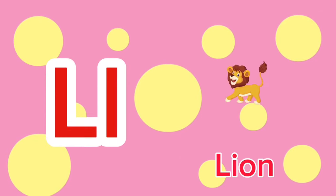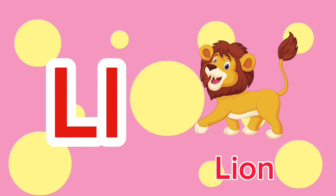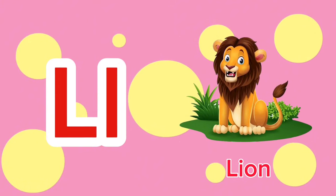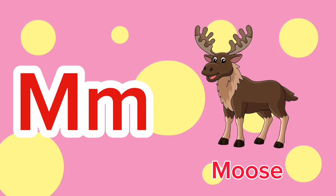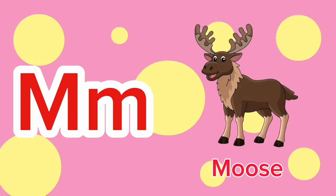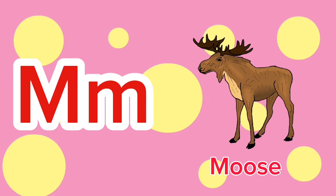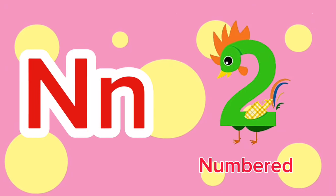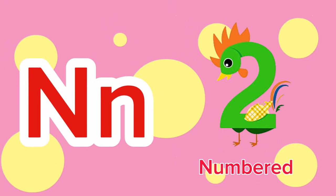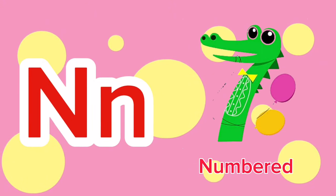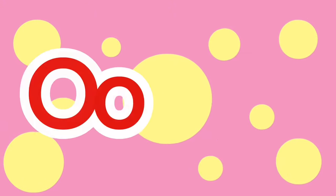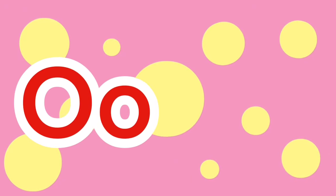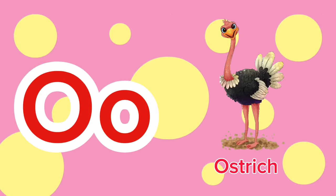L is for Lion. L-l-lion. L is for Lion. L-l-l. M is for Moose. M-m-moose. M is for Moose. M-m-m. N is for Newt. N-n-newt. N is for Newt. N-n-n. O is for Ostrich. O-o-ostrich. O is for Ostrich. O-o-o.